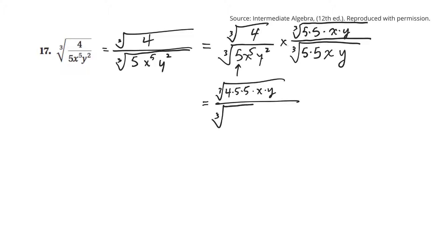On the bottom, I'm going to have the cube root of, now there's three 5s. One there and two more there. There's x to the 5 and one more set, 6. And, y squared and y, that'd be 3.